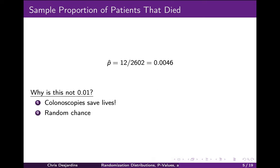To calculate the sample proportion, we take the number that died, 12, and divide it by the sample size, 2,602, and arrive at a proportion of 0.0046. Notice that our sample proportion is not equal to 0.01. There are two possible causes: first, colonoscopies do in fact save lives by removing precancerous colon polyps, so the proportion that died is less than 0.01; or second, colonoscopies do not save lives, and just by random chance our sample proportion is not 0.01. How can we rule out random chance, or at least quantify it?